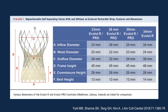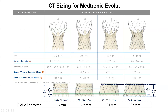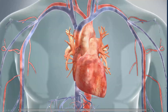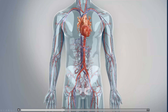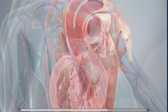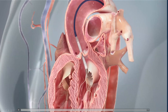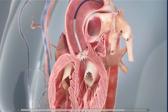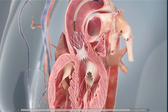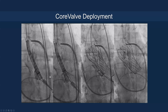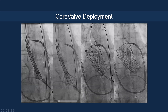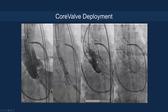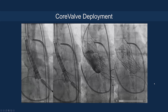With the self-expanding Evolut platform, there are a number of dimensions to consider with different sizes and a corresponding sizing chart. For transfemoral approach, the device does not need to be pre-mounted — the valve is housed inside the capsule. You have the option of recapturing the device up to 80%, and if you're happy, then you can release the valve. You start with the inflow just below the annulus, with the pigtail position at the non-coronary cusp, then achieve annular contact, and at 80% deployment, if satisfied, you release the valve.